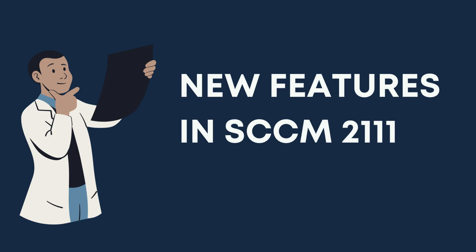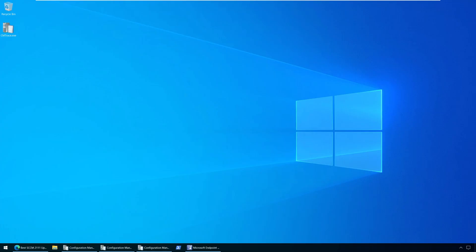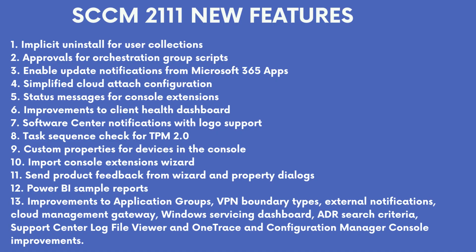New Features in SACM 2111: Every new current branch update includes new features and improvements. The SACM 2111 includes the following new features: Number 1, Implicit Uninstall for User Collections. Number 2, Approvals for Orchestration Group Scripts. Number 3, Enable Update Notifications from Microsoft 365 Apps. Number 4, Simplified Cloud Attach Configuration. Number 5, Status Messages for Console Extensions. Number 6, Improvements to Client Health Dashboard.